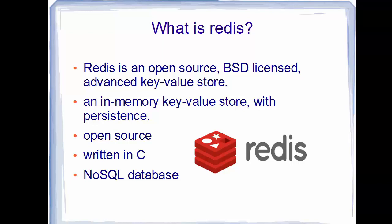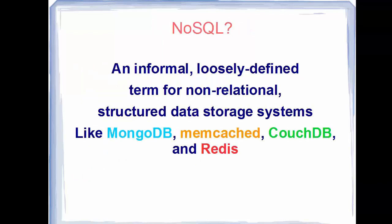NoSQL is an informal, loosely defined term for non-relational structured data storage systems, like MongoDB, Memcached, CouchDB, or Cassandra. Following in the footsteps of other NoSQL databases such as Cassandra, CouchDB, or MongoDB, Redis allows the user to store vast amounts of data without the limits of relational databases.